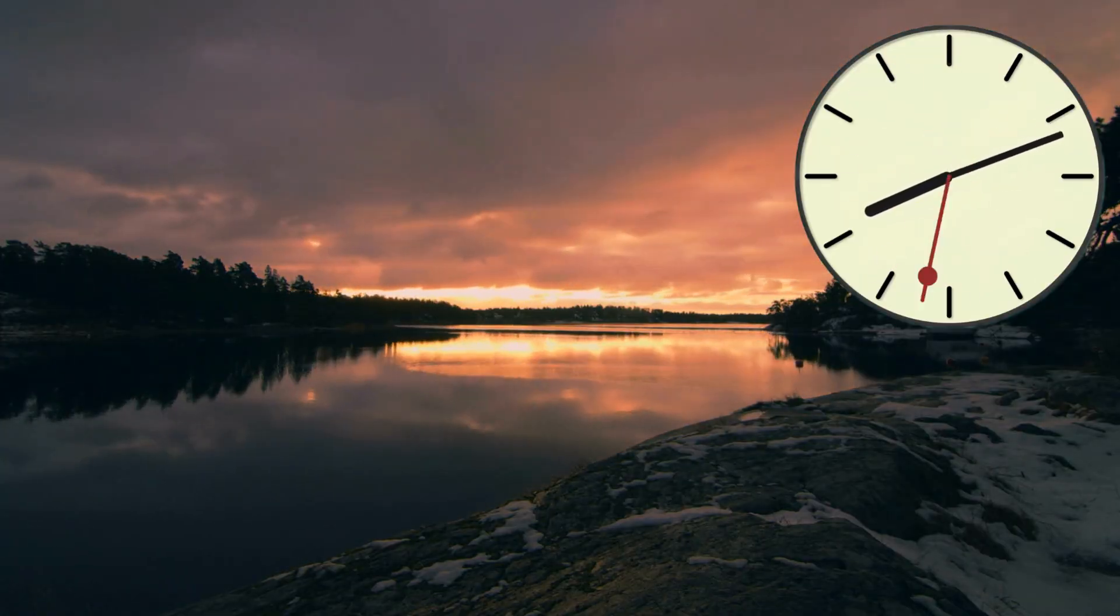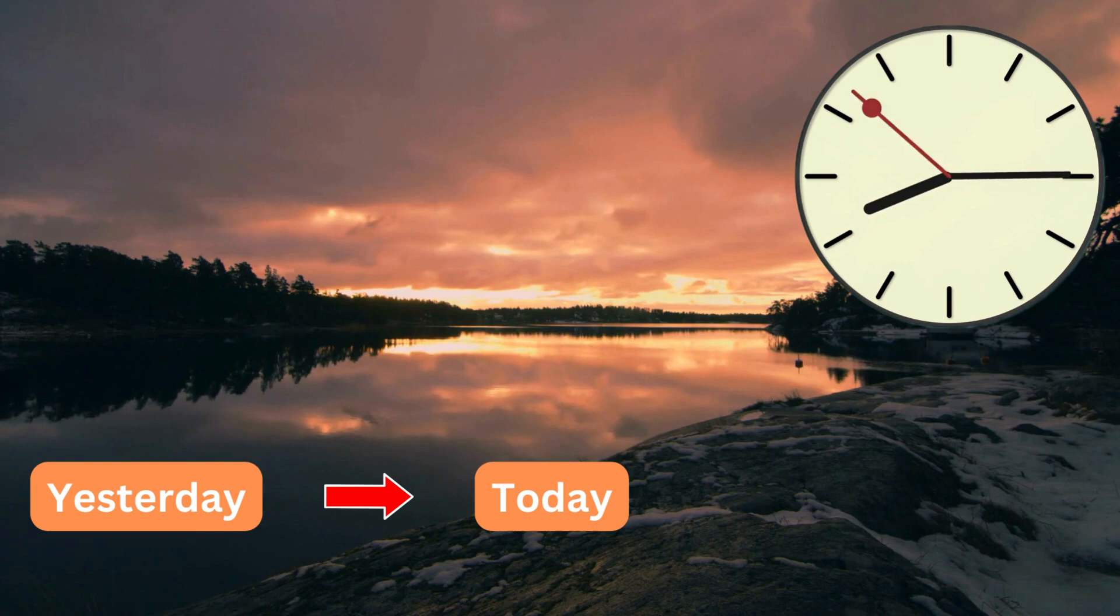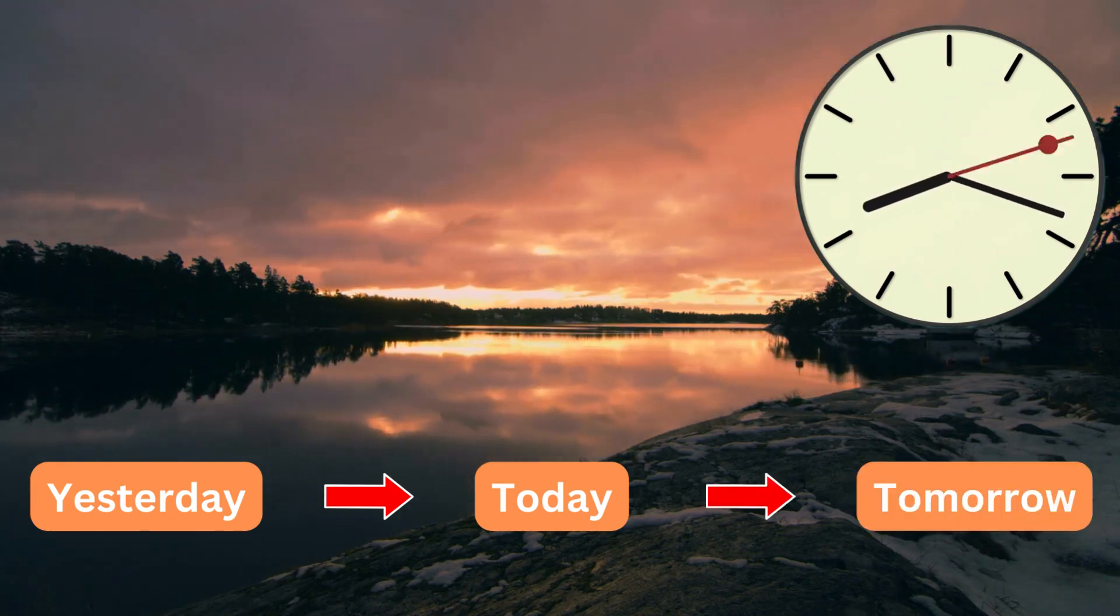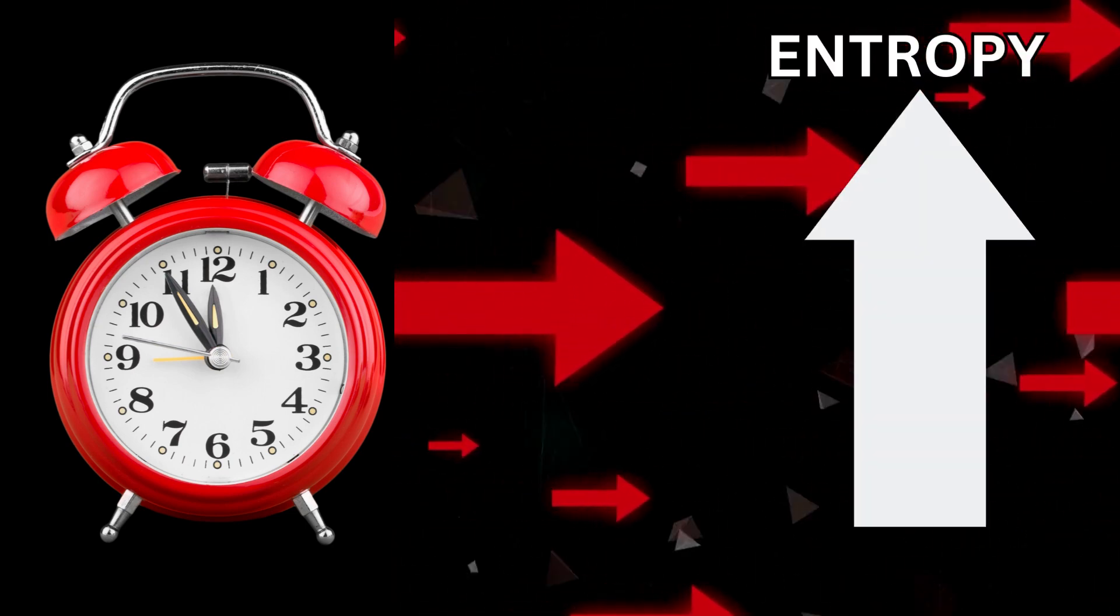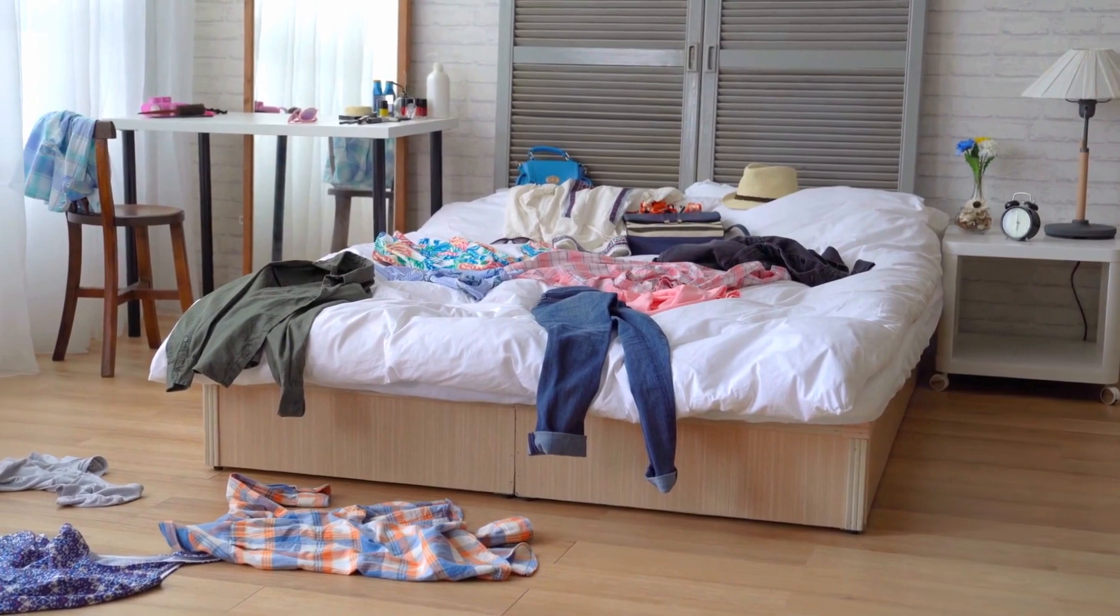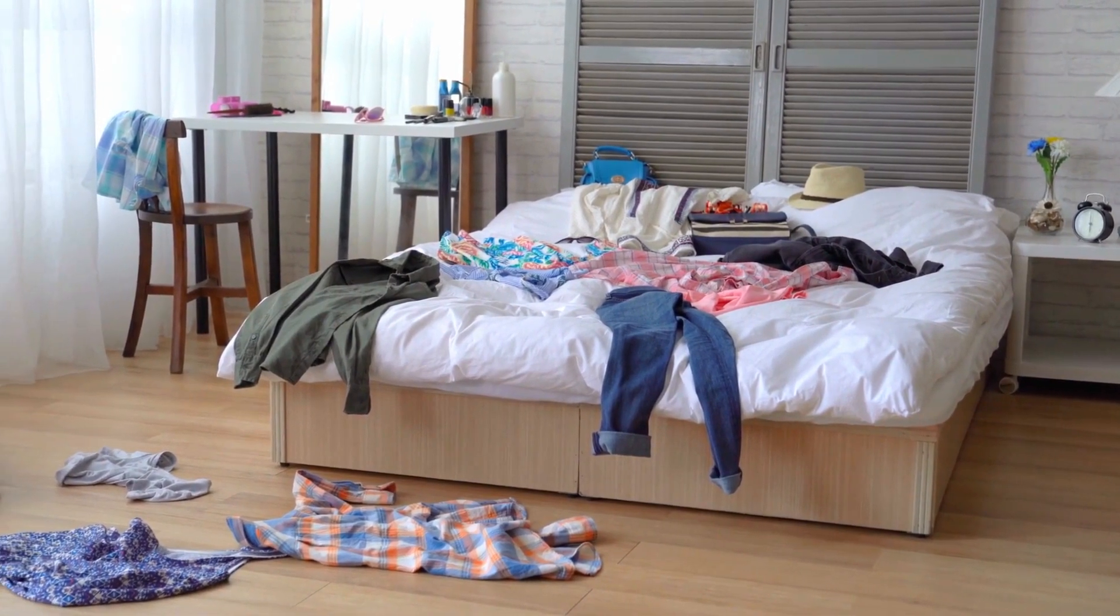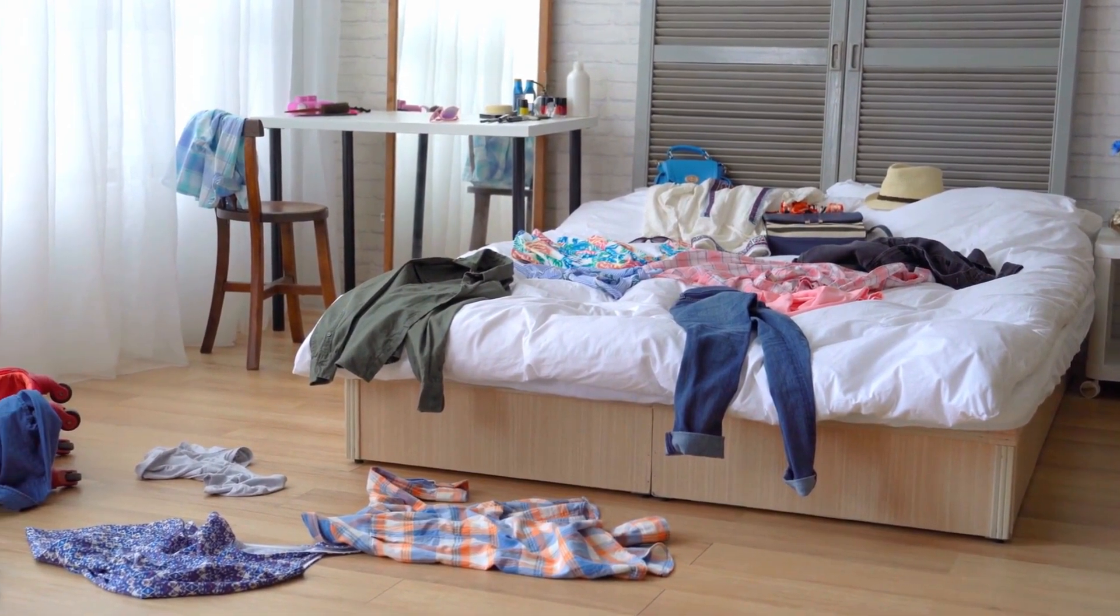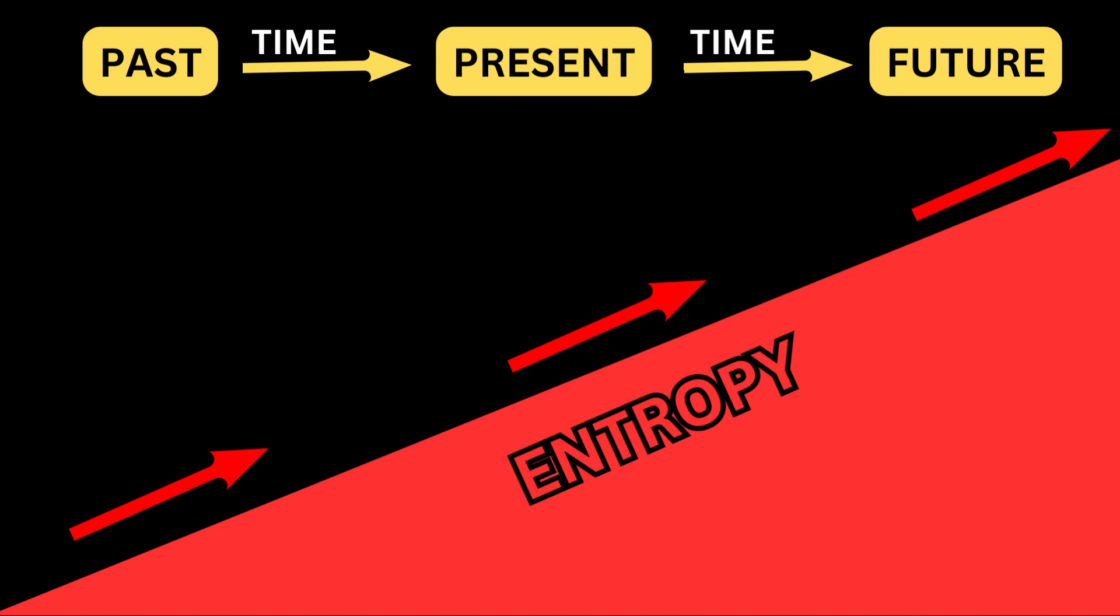In a nutshell, time's forward movement is a result of the increasing entropy in our universe. It's like the universe's natural tendency to mess up that room, making sure it stays disorderly rather than neatly arranged. This simple concept explains why time keeps flowing in one direction, from the past to the present and into the future. If you like this video, then you will certainly like this one, and thank you for watching.